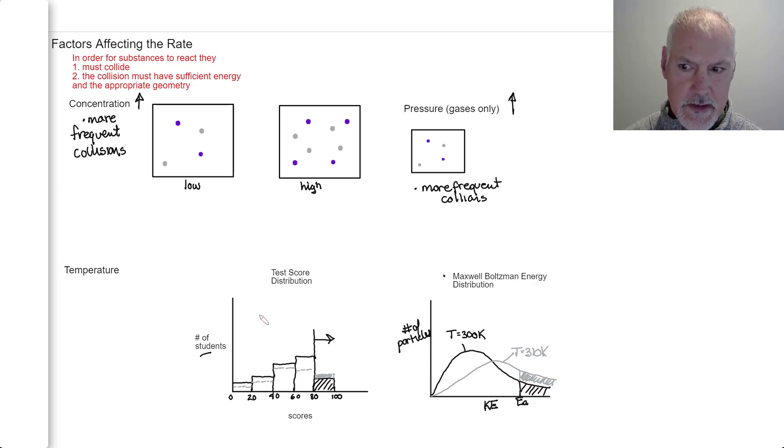Temperature has sort of a two-fold effect. First of all, because they're moving faster, you get more frequent collisions. But in addition, a greater portion of those collisions exceed the activation energy. So again, temperature goes up, two-fold effect: more frequent collisions and a greater portion of the collisions are successful because they exceed the activation energy.